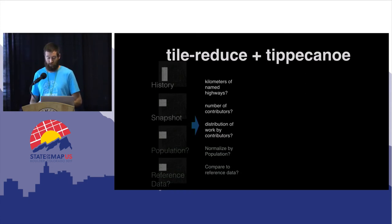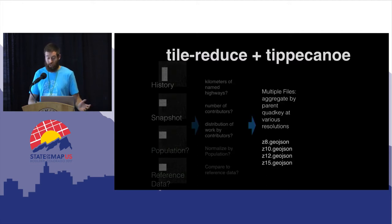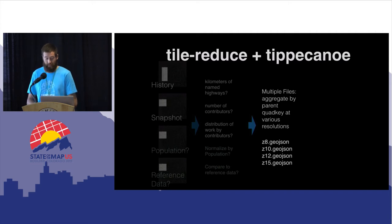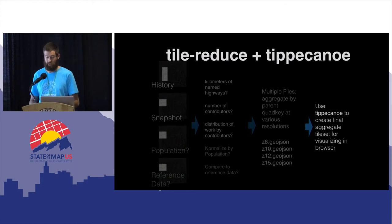For each tile we calculate various attributes such as kilometers of named highway, number of contributors, and the distribution of work by those contributors within tiles — where we could also normalize by population or compare to reference data. Results are returned at zoom 15 resolution and aggregated down to zoom level 8. The final result is a series of GeoJSON files representing tile stats at various zoom levels, which are then fed back into Tippecanoe to create final aggregate tile sets with statistics for each editing quarter. We repeat this process for every quarter since 2007, generating tile sets that contain information about every edit and the subsequent state of the map at the end of each quarter.